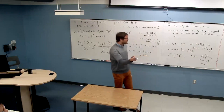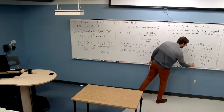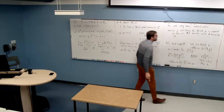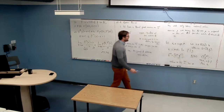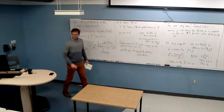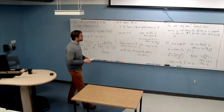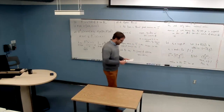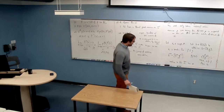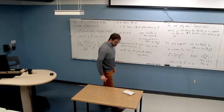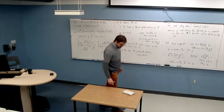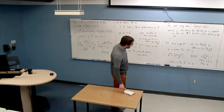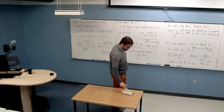I can cut the circle open at that fixed point and get an action of this group on the interval, and that completes the proof in the circle case. That's basically everything I'll say about nilpotent groups and regularity.